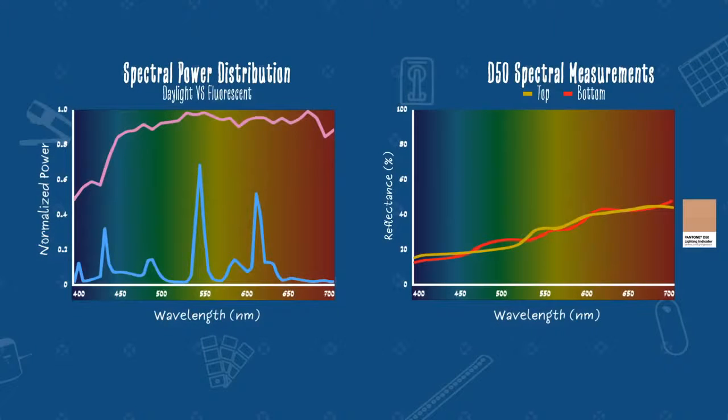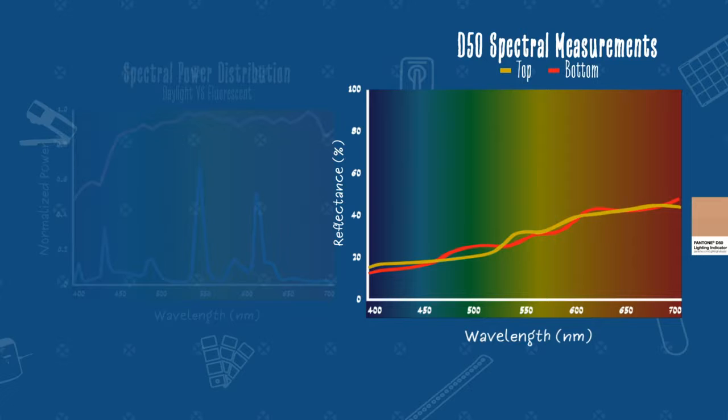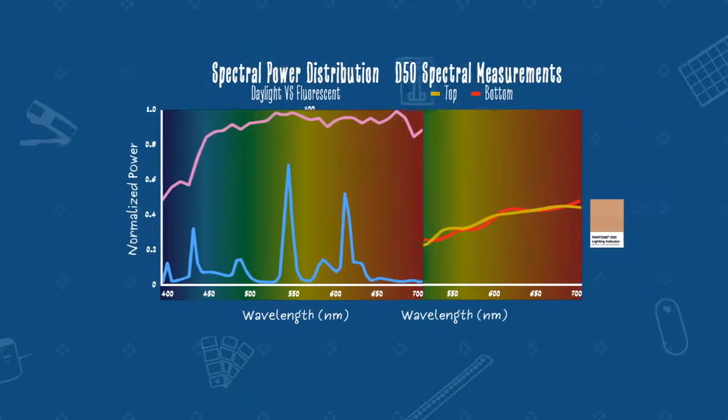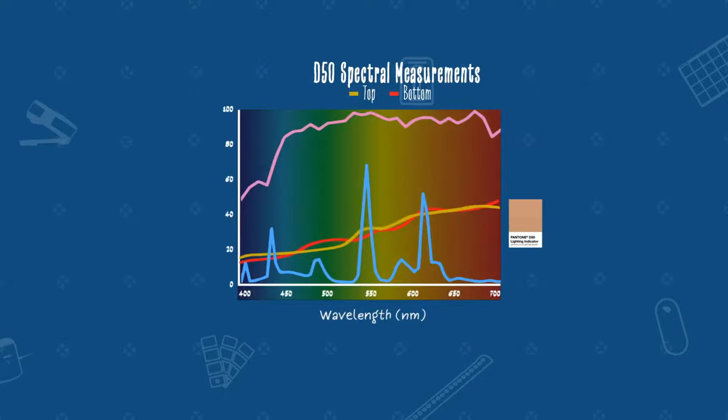So back to our metameric issue. Here we can see the spectral measurements of the top and bottom of the lighting indicator. They are definitely different. The color of the indicator can shift depending on where the wavelengths of the physical sample align with the spectral power distribution of the light source.